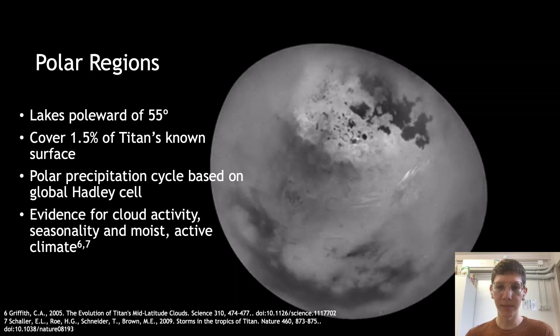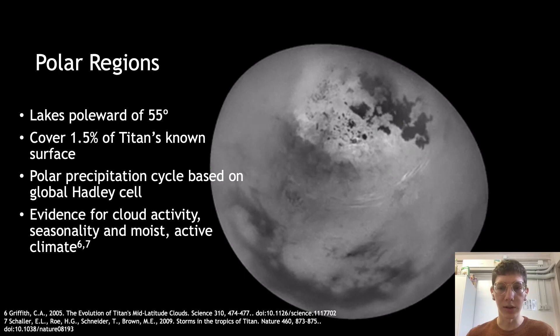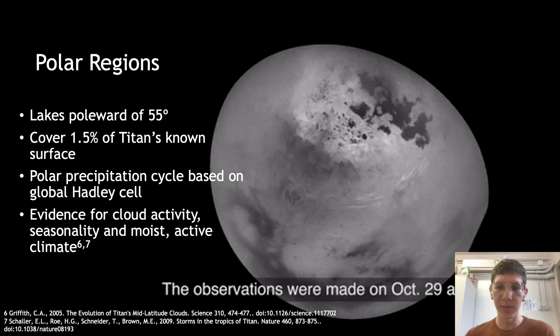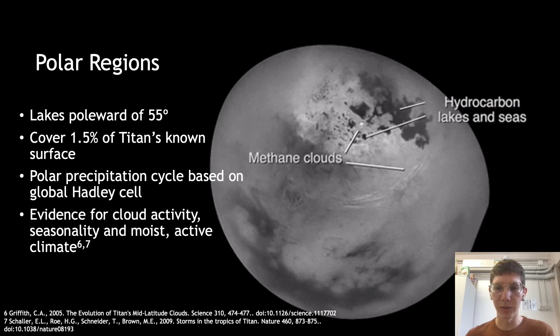So all of these lakes are restricted to latitudes poleward of 55 degrees and cover 1.5% of Titan's observed surface. Dark lake regions cover 10% of the area in the northern polar region, but only 0.4% in the southern. The seasonal cycle of polar precipitation is a sequence of wintertime mid-level tropospheric drying from descending dry air in the Hadley circulation, followed by warming and moistening of low-level air as the spring pole becomes illuminated and moistening of the mid-level troposphere by deep convection over the summer pole.